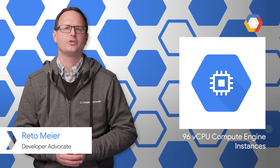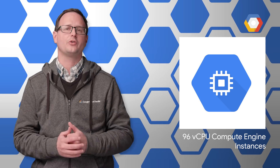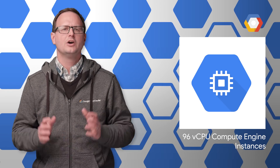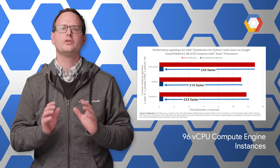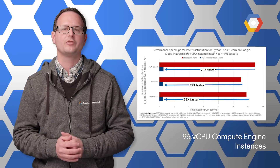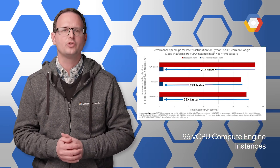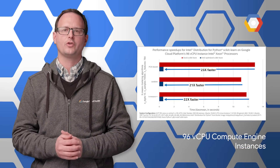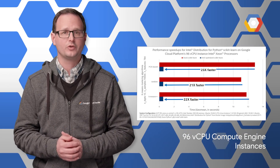Compute Engine machine types with 96 vCPUs and up to 624 gigabytes of memory are now generally available. For applications that can scale vertically, you can leverage all 96 vCPUs to decrease the number of VMs needed to run your applications, while still reducing your total cost of ownership. Take a look at the post for more details.